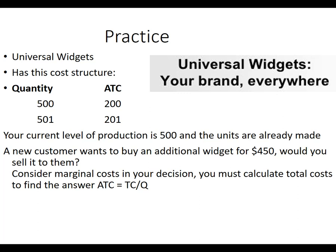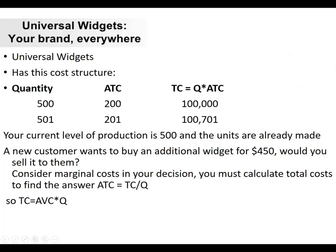There's not going to be a person telling you the answer in a second, so pause the video, think about it, calculate, read that bottom part, see if you can figure it out. Now I'm back. Hopefully you made the calculation and figured out that total cost is quantity times average total cost, so you should have multiplied 501 times 201 and gotten 100,701, and that marginal cost of that additional unit is $701. So you should not have produced that unit. That might actually get you fired — the unit cost the firm $700 and you sold it for $450.